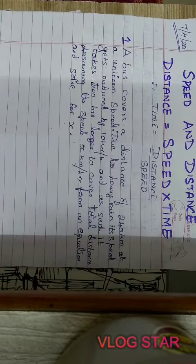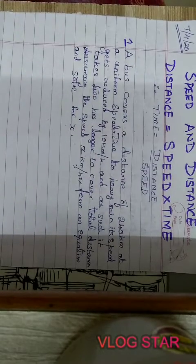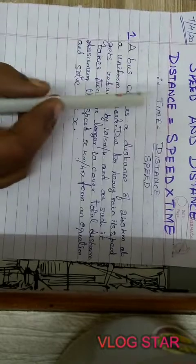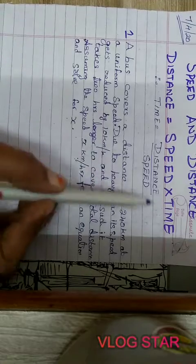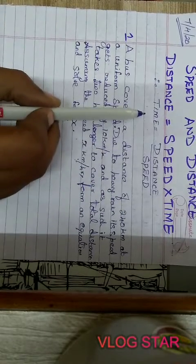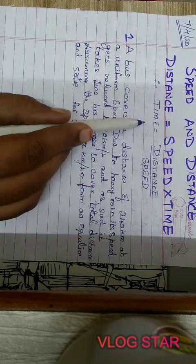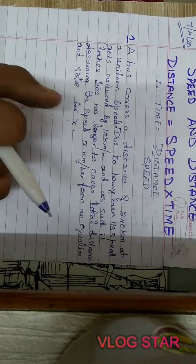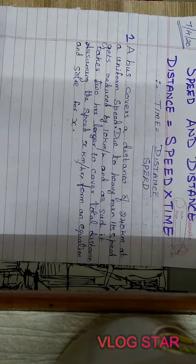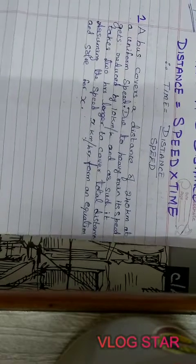Good evening students. Today we are going to learn quadratic equation statement problems based on speed and distance. From your physics, you would have already learned distance is equal to speed into time. So, you know how we get the time? Distance divided by speed. Time is equal to distance divided by speed. In this class, we are going to use this formula to solve distance problems, and one of these sums will surely come for your exam. Please try to understand clearly, go through it, and try to solve it.